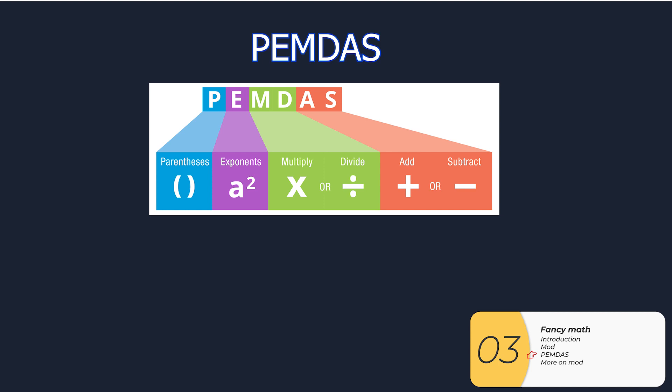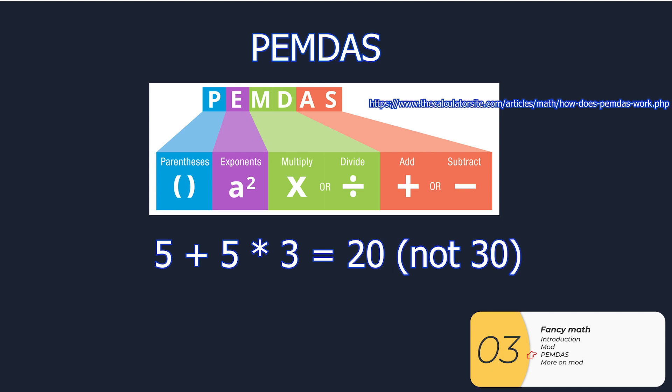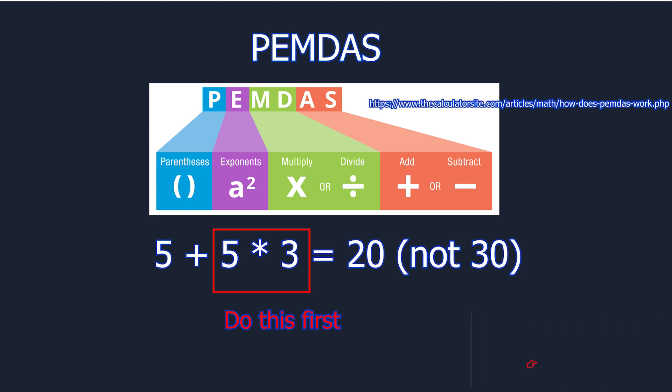Other thing to look out for, you need to follow PEMDAS, which is the order of operations. So the classic mistake that people make is if you have something like 5 plus 5 times 3, it's equal to 20, not equal to 30, because I need to do the 5 times 3 first.